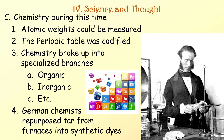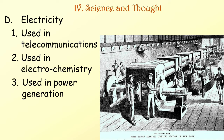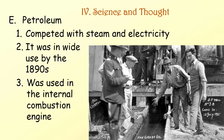Chemistry during this time: atomic weights could be measured, the periodic table was codified, and chemistry broke up into specialized branches — organic, inorganic, etc. German chemists repurposed tar from furnaces into synthetic dyes. Electricity was used in telecommunications, electrochemistry, and power generation. Petroleum competed with steam and electricity, was in wide use by the 1890s, and was used, of course, for the internal combustion engine.